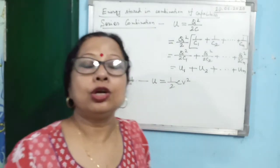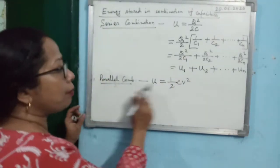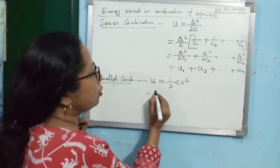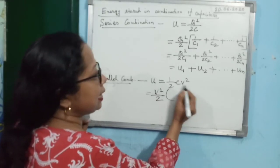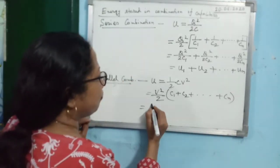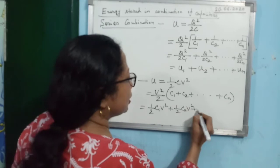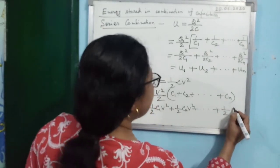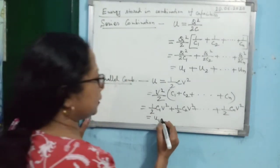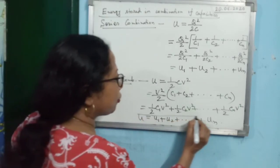For parallel combination, since V is the same for all, we use the expression ½CV². For parallel combination, C equals C1 + C2 + ... + Cn for n capacitors. Separating the terms, the total energy becomes ½C1V² + ½C2V² + ... + ½CnV². Now ½C1V² is the energy of the first capacitor, ½C2V² is the energy of the second capacitor, and so on up to the last capacitor.